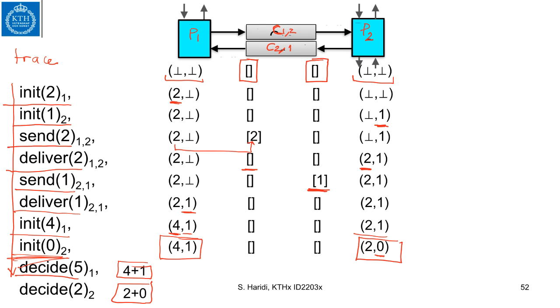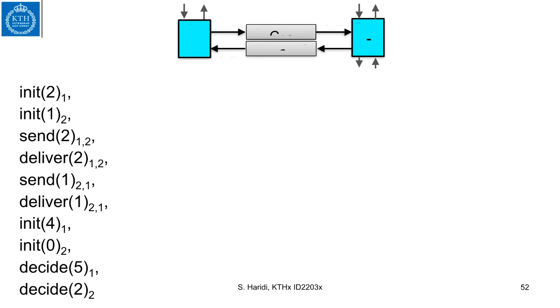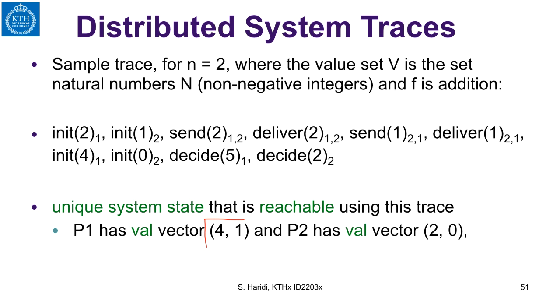So remember, this is 4, 1 and that is 2, 0. And if we go back and look here, that is the vector 4, 1 at p1 and the vector 2, 0 at p2.